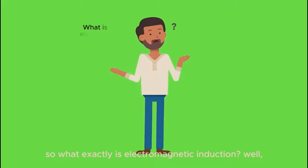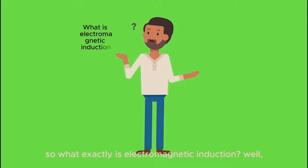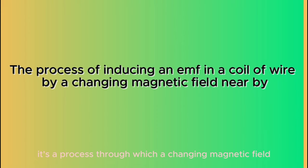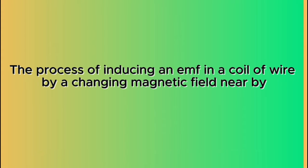So, what exactly is electromagnetic induction? Well, it's a process through which a changing magnetic field induces an electric current in a nearby conductor.